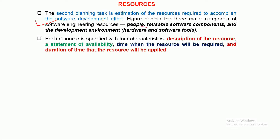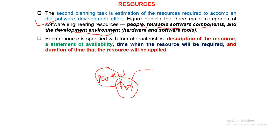The three resource categories are: people, reusable software components, and the development environment — hardware and software tools. A project is basically dependent on these three kinds of resources.